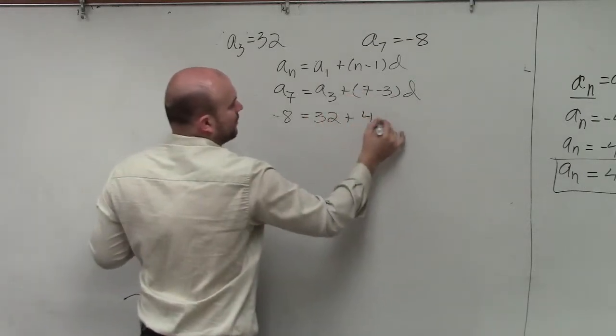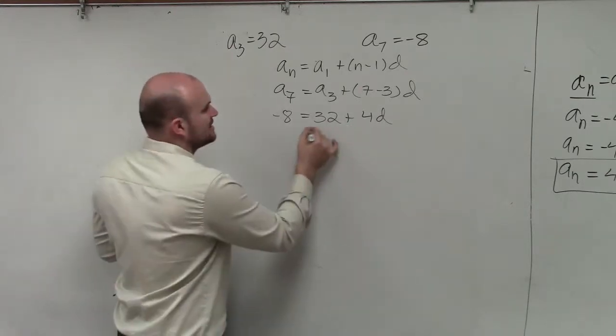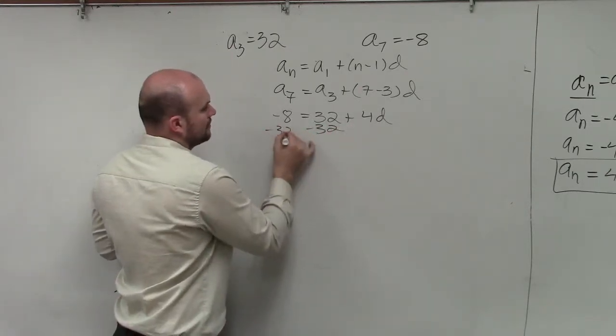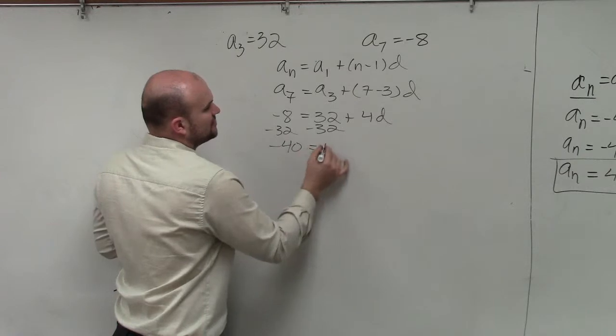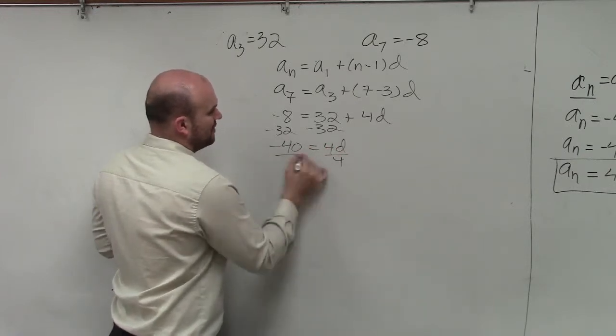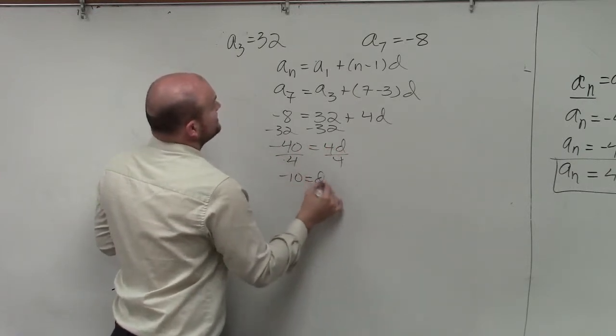7 minus 3 is 4d. So now, to solve for d, I subtract 32, and I get negative 40 equals 4d, divide by 4, divide by 4, negative 10 equals d.